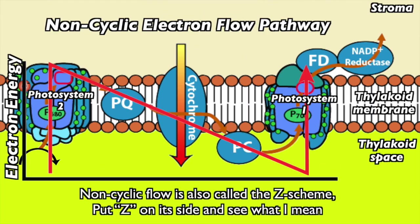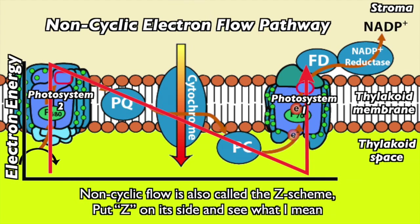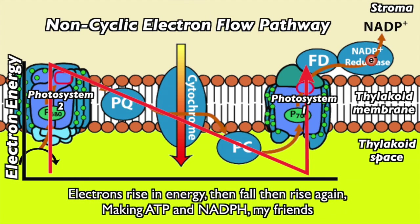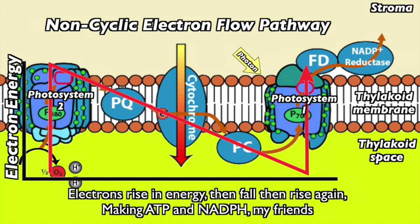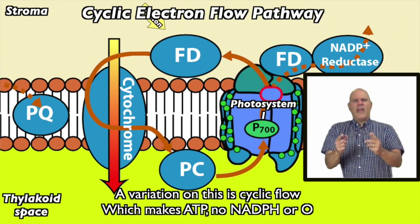Non-cyclic flow is also called the Z scheme. Put Z on its side and see what I mean. Electrons rise in energy, then fall and rise again, making ATP and NADPH, my friend.